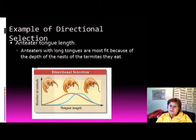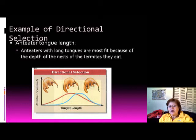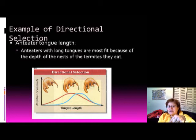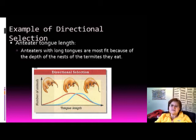Another example of directional selection is the anteater. Anteaters insert their tongues into ant nests to collect ants, and because of how termite mounds are built, the longer the tongue the more food it can get. Anteaters with the longest tongues survived and reproduced, so the population evolved in that direction.